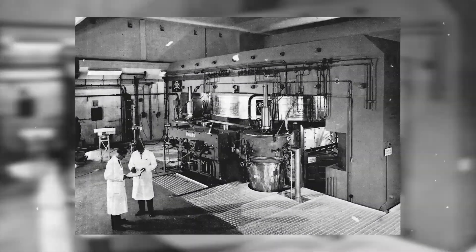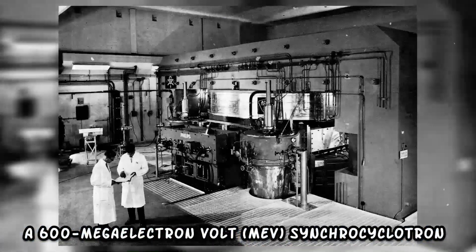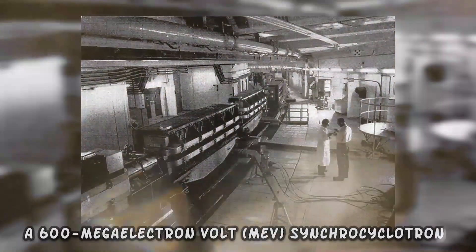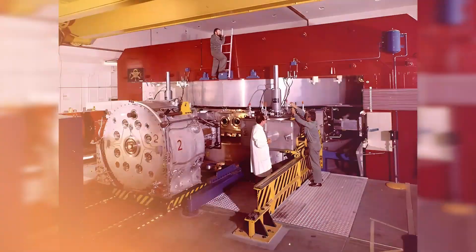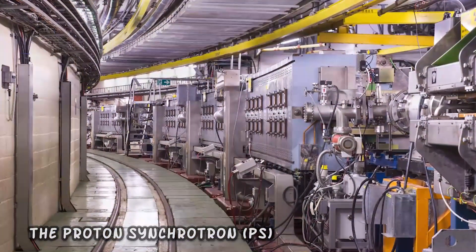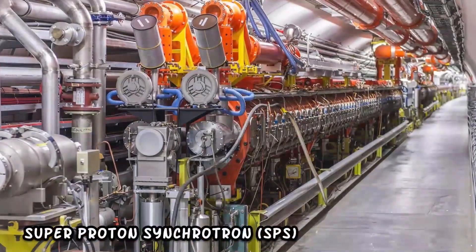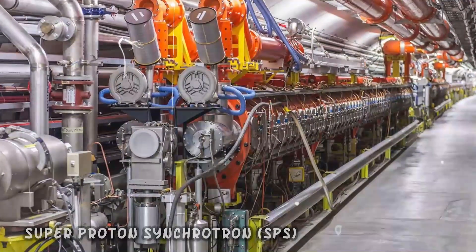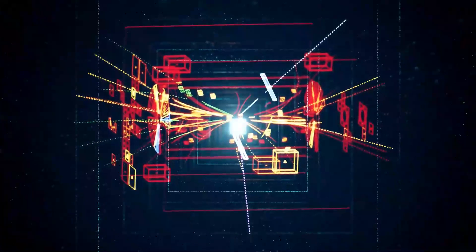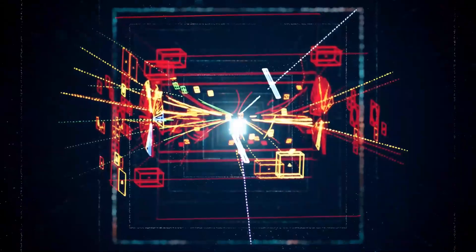CERN's first particle accelerator, a 600 mega-electron volt (MeV) synchrocyclotron, was activated in 1957, leading to the development of the theory of the weak force. The proton synchrotron (PS) and superproton synchrotron (SPS) were later developed, leading to the discovery of W and Z particles in 1983.